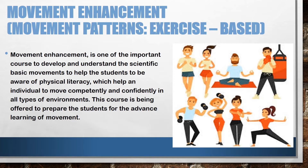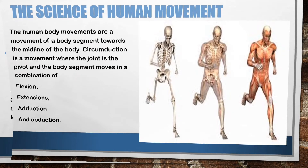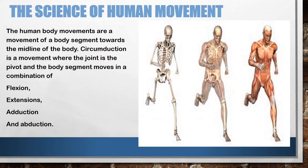The type of movement that can be produced in the synovial joint is determined by its structural type. Human body movements include movement of a body segment towards the midline of the body. Circumduction is a movement where the joint is the pivot, and the body segment moves in a combination of flexion, extension, adduction, and abduction.